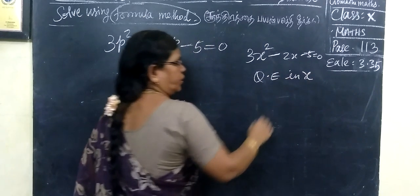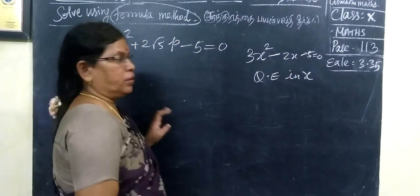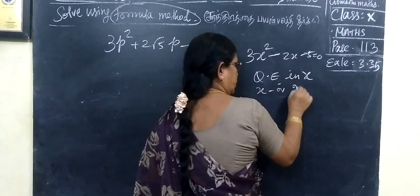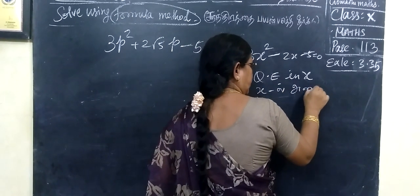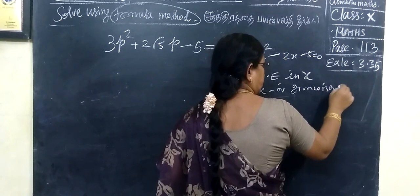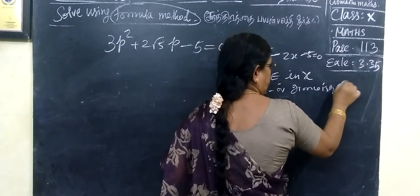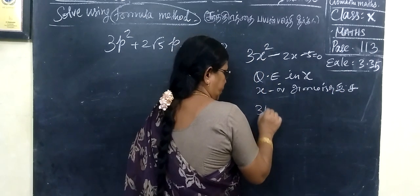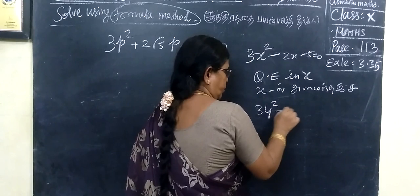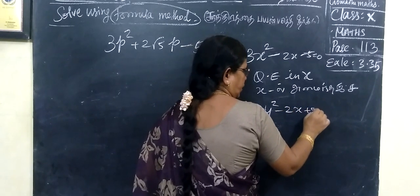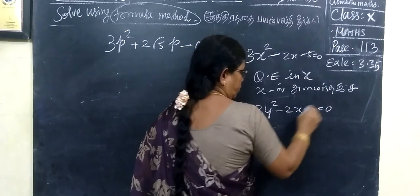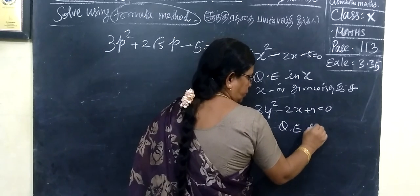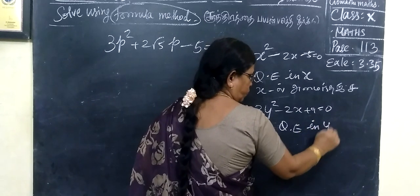It is the quadratic equation in x. Suppose here, 3y squared minus 2x plus 9 equal to 0 — this is a quadratic equation in y.